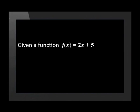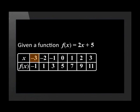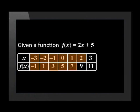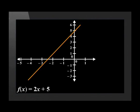Karin has just shown us how to translate functions. Let's explore this a little more together. Given a function, f of x is equal to 2x plus 5. The table of values for this table is negative 3, negative 1, negative 2, 1, negative 1, 3, 0, 5, 1, 7, 2, 9, 3, 11. And here is the plotted function.